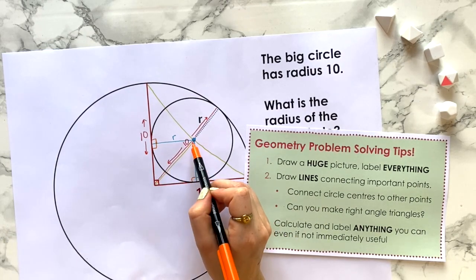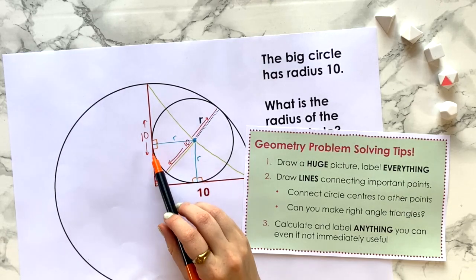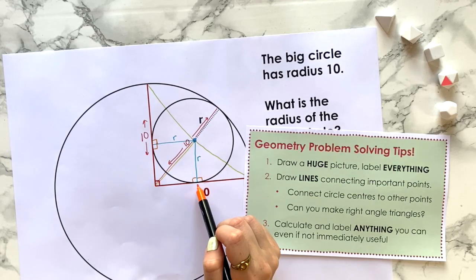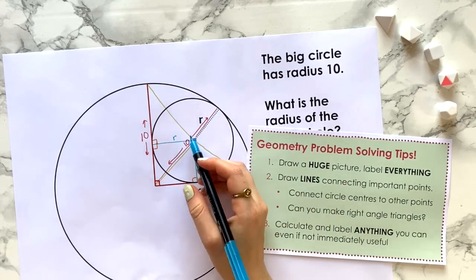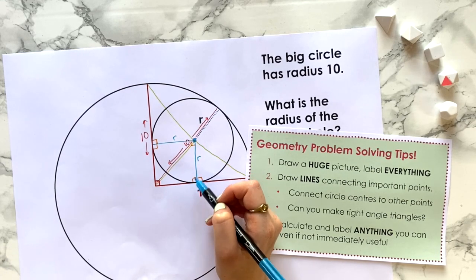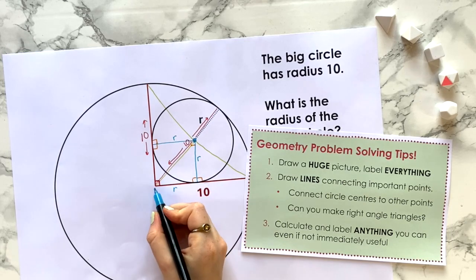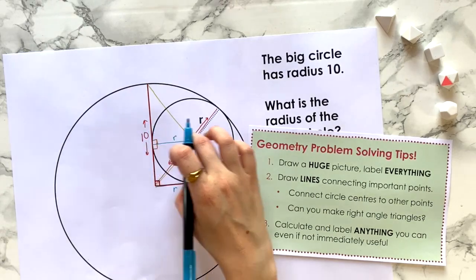We sort of have what looks like a square here, having two sides of this quadrilateral being the same length as well as this many right angles. I'm confident that we can say this is a square, and that's exciting because we can put on a right angle here. But also, every side of the square is the same length, so that means that this length here is also r. This section here is the same as this length, and the same over here as well.